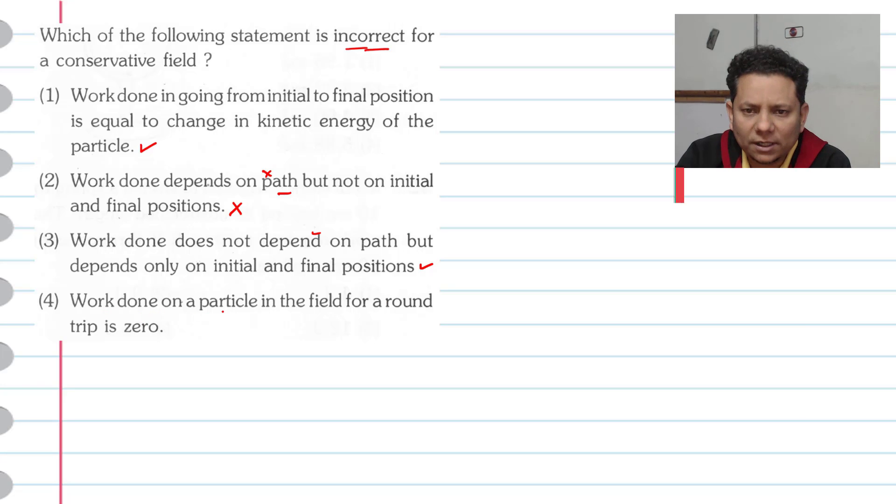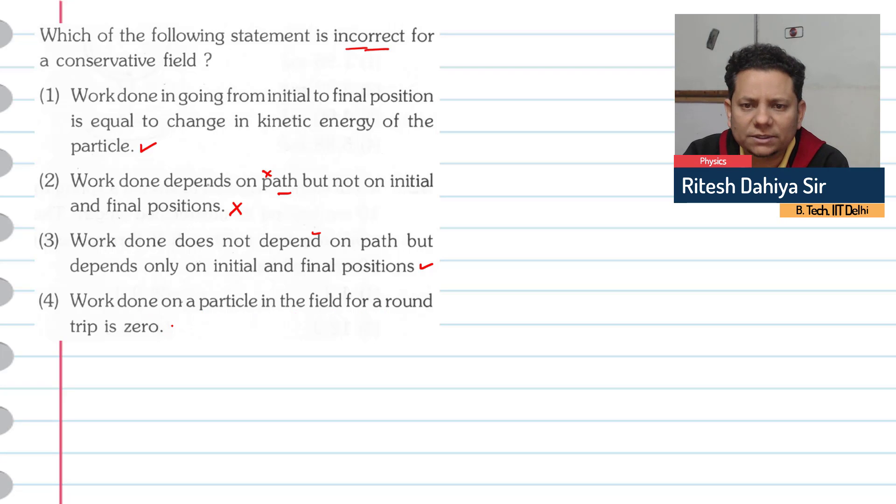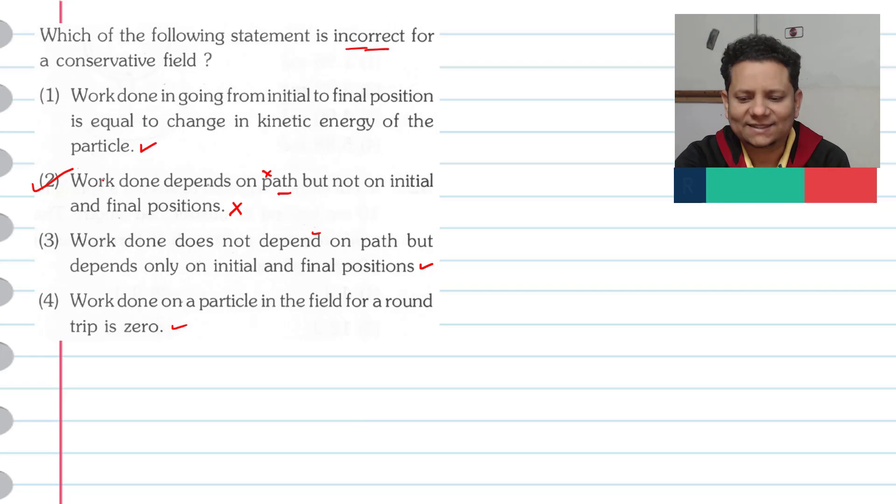Fourth option is work done on a particle in a field for round trip. This is correct. Because we have incorrect option to know. Hence, option number 2 would be the right answer.